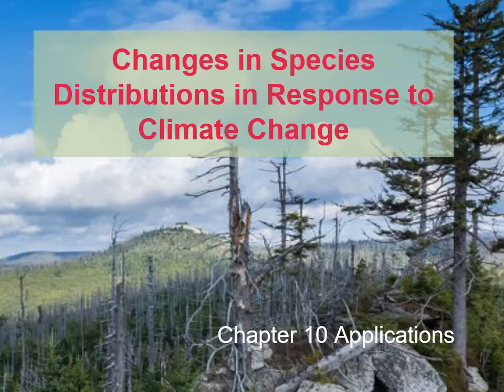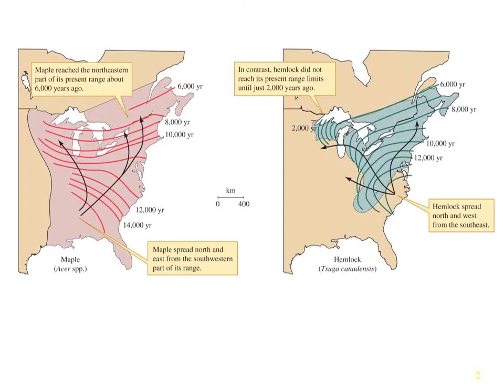At the end of Chapter 10, there's an application called Changes in Species Distributions in Response to Climate Warming, with some really cool examples of cases where distributions of species and populations have adjusted with climate change. Earlier in the chapter, we talked about post-glacial movement of species — the maple and the hemlock trees after the glaciers melted — and a latitudinal movement over large areas following climate change after glaciation.